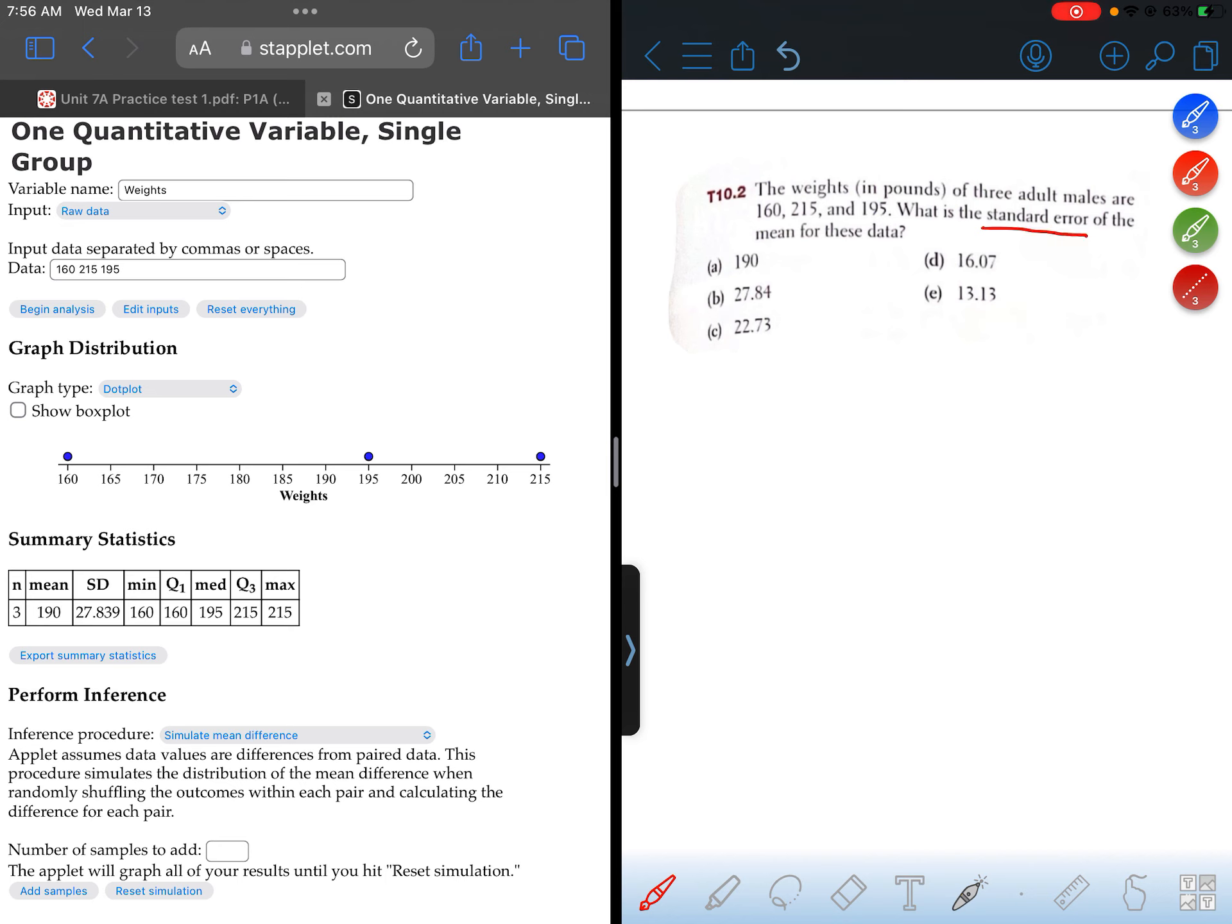All right, so the standard error is S over root N, where S is the standard deviation of the sample, and N is the sample size.